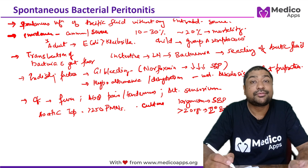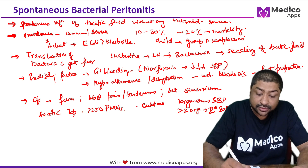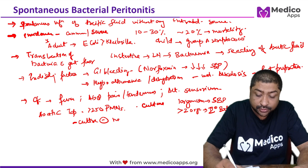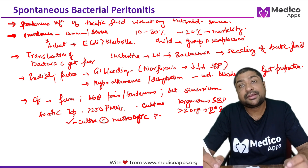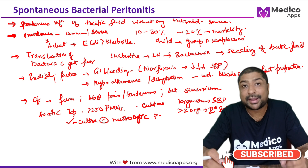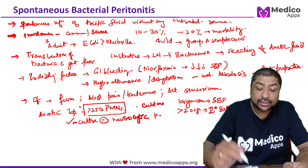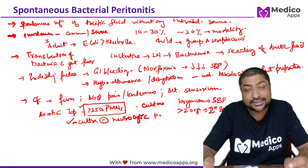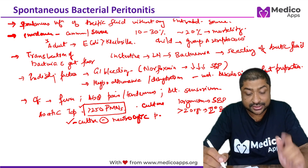Sometimes no organism is isolated in culture — that case is called culture-negative neutrocytic peritonitis. For all practical purposes, culture-negative neutrocytic peritonitis is treated and managed the same way as spontaneous bacterial peritonitis. The most important diagnostic criterion is more than 250 polymorphonuclears in the ascitic tap.